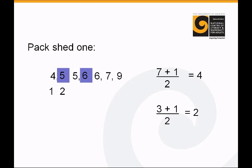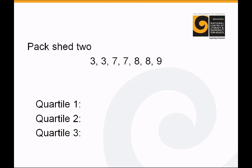And we repeat the process for the numbers that are on the right of the 6. So you can see there are 3 numbers on the right of the 6. 3 plus 1 is 4, divide that by 2 and we get 2. We just count along 1, 2, and it's 7. So there are our 3 slices, our 3 pieces of data. These are called our interquartile ranges. So quartile 1 is 5, quartile 2 is 6, quartile 3 is 7. And then we have a go at working out the interquartile range for pack shed 2. Sometimes it's easier to start straight from the middle. So in this case quartile 2 is 7, quartile 1 is 3, quartile 3 is 8. And that's how you work out the interquartile range.